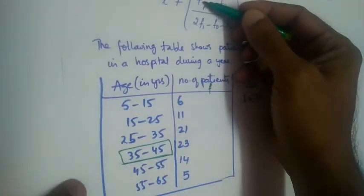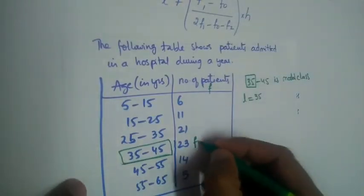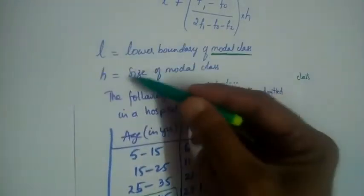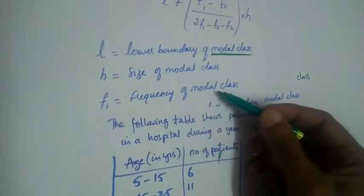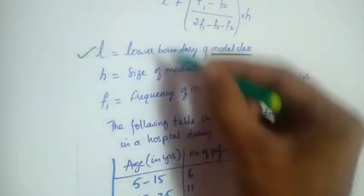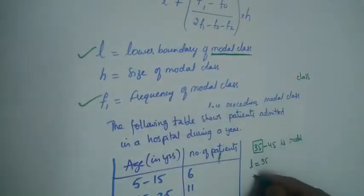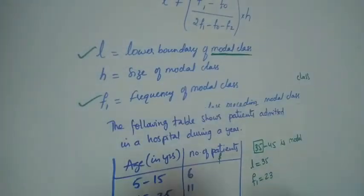Now F1 — the frequency of the modal class. The frequency of the modal class is 23, so F1 equals 23.